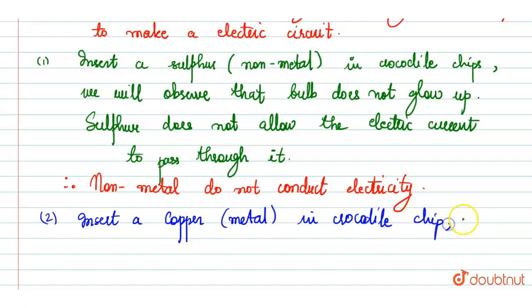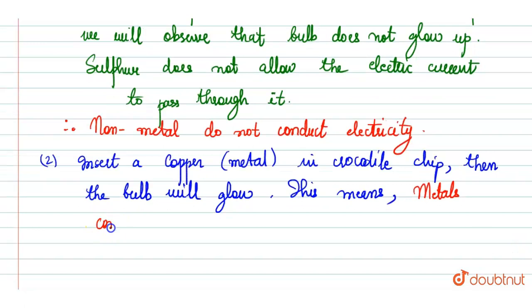We will see the bulb will glow. The bulb will glow. This means that the metal conducts the electricity.